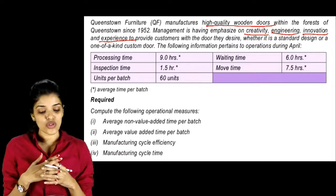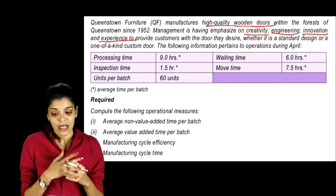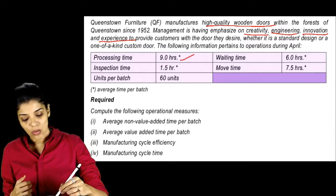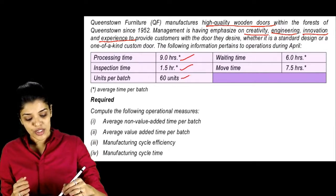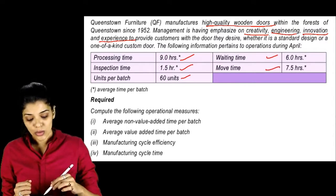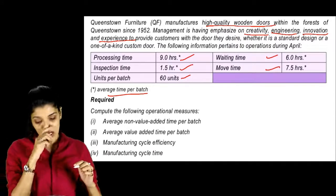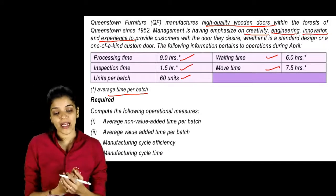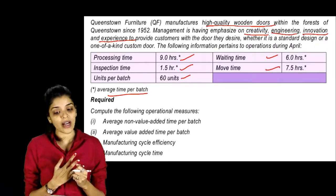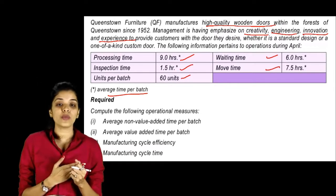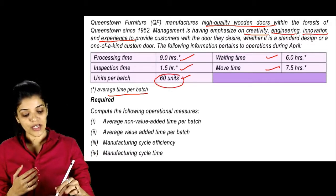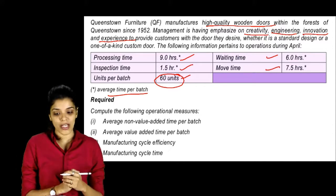The following information pertains to operations during April. Processing time is 9 hours per batch on average. Inspection time is 1.5 hours. Waiting time is 6 hours. Move time is 7.5 hours. Units per batch is 60 units. We need to compute the following operational measures.